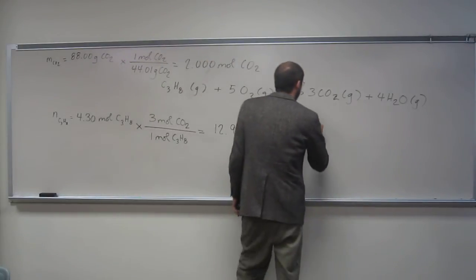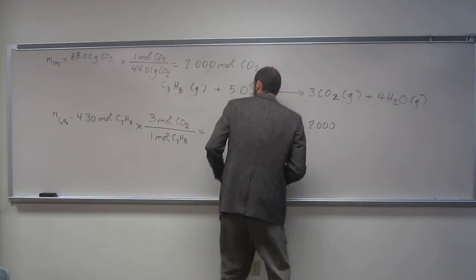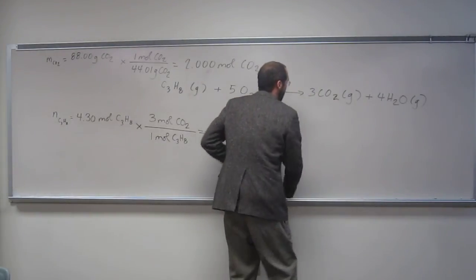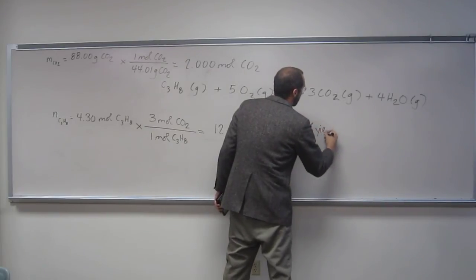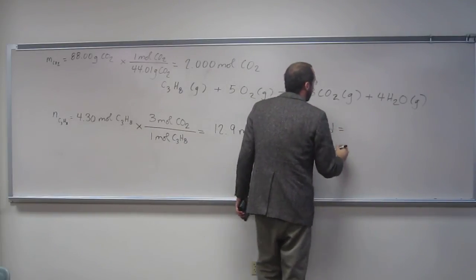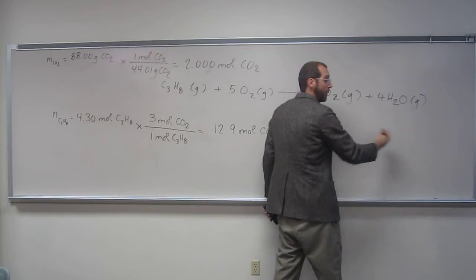Okay? So, let's do that. So, 2.00. Let's do it this way: percent yield equals the part over the total times 100 percent. Right?